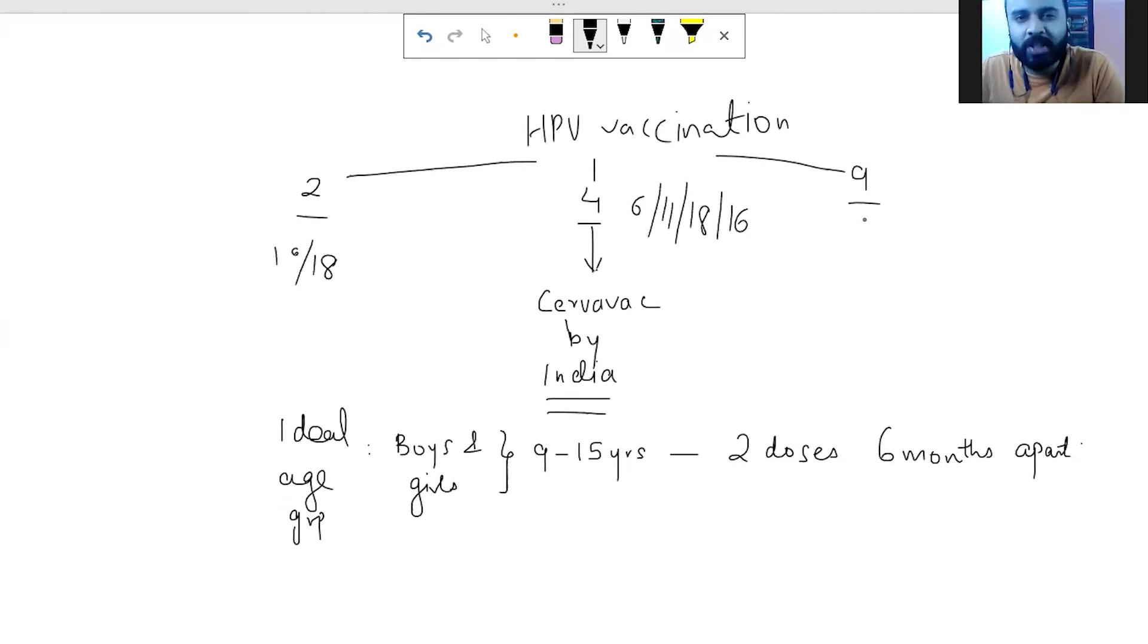Or it can cover a nonavalent one which covers 9 different subspecies which includes 6, 11, 18, 16, 31, 33, 45, 53, many more of them. So basically 9 major variants and we call it Gardasil whereas the one that is significant over here is Sarvavac.